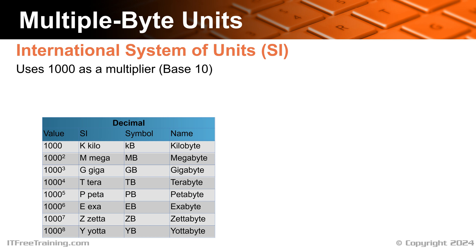The SI standard was around before the first computers. However, there was a problem when the computer was first developed. Since computers work using switches - that is, a zero or one - everything in a computer is based off the power of two, because a switch can either be a one or a zero. Thus, a kilobyte in SI units technically should be 1000, but 1000 is not a power of two. 1024 is a power of two, and being close enough was a good enough approach with the first computers. This was not a problem when computers did not have a lot of storage, but as storage increased, this started to cause problems.